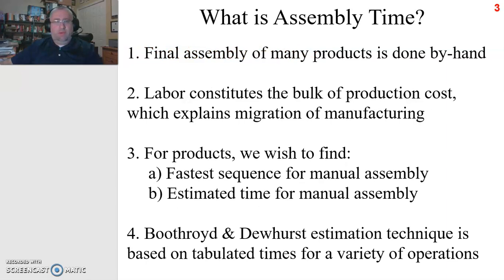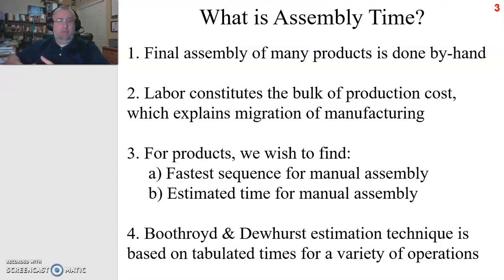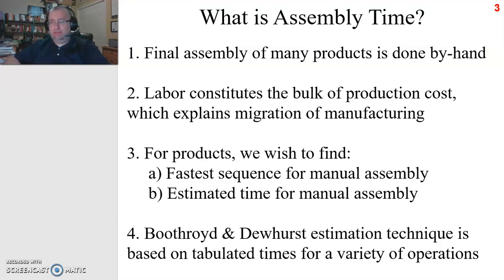So the first question to ask is: what is assembly time? It turns out that the final assembly of many products is actually done by people by hand — it's not mechanized. Essentially, unskilled laborers are given a whole series of parts that combine into sub-assemblies, assemblies, and ultimately products, and their job is to put all the pieces together by hand. Labor constitutes the bulk of production costs done this way, and that explains the migration of manufacturing off U.S. soil to places where human laborers are less expensive to hire and not subject to U.S. laws.